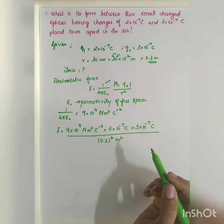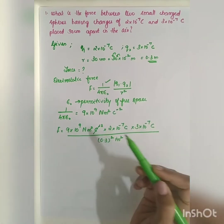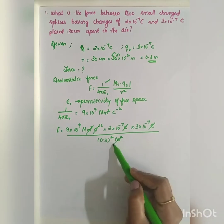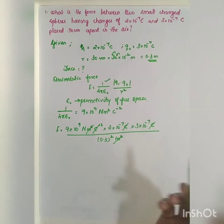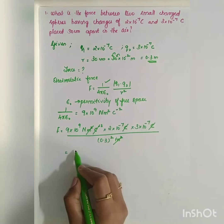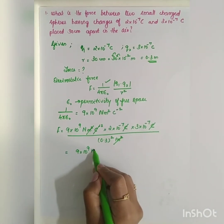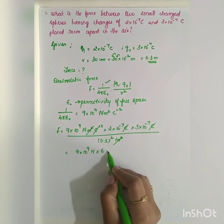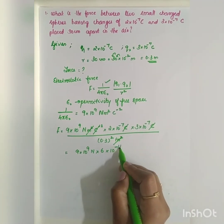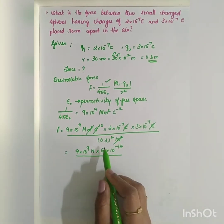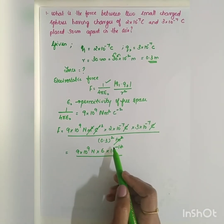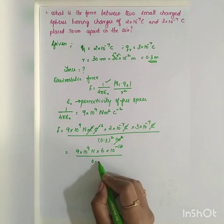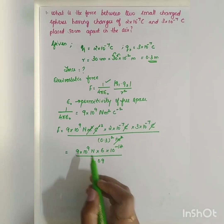Cancelling units: C⁻² in the constant cancels with the two coulombs from the charges, and meter squared cancels with meter squared from R². Numerically: 2×3 = 6, so the charges give 6×10⁻¹⁴. The denominator: 0.3×0.3 = 0.09.